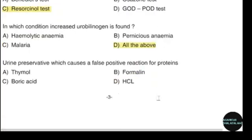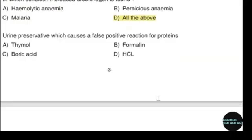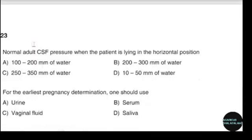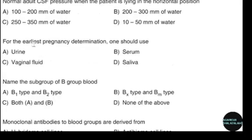In which condition is increased urobilinogen found? Correct answer: option D, all of the above. The urine preservative which causes a false positive reaction for proteins is thymol. Correct answer: option A. Normal adult CSF pressure when the patient is lying in the horizontal position is 100–200 mm of water. Correct answer: option A. For the earliest pregnancy determination, one should use serum. Correct answer: option B.